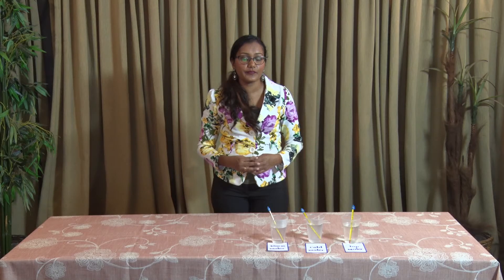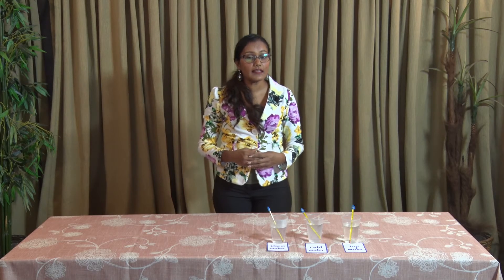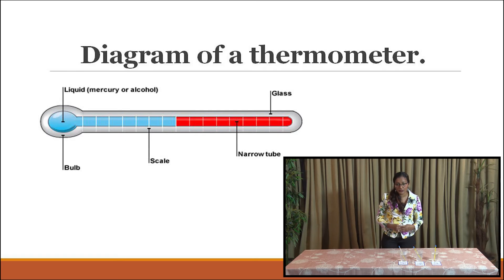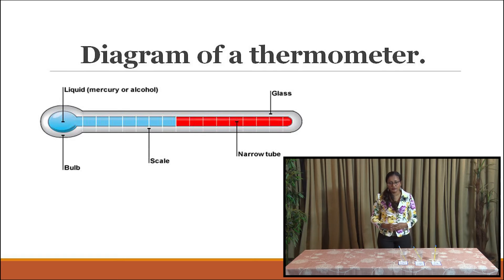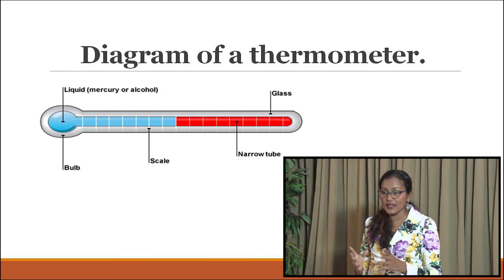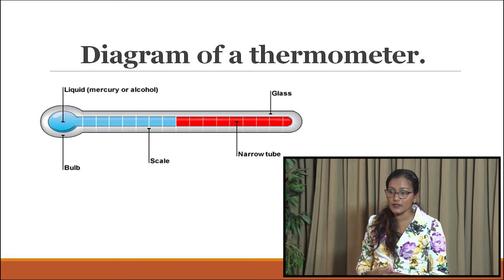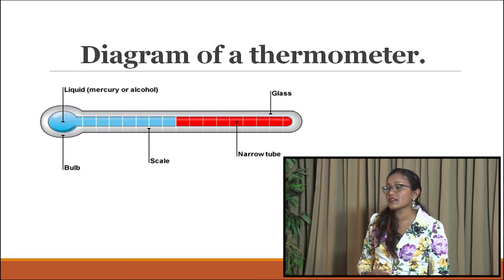Your task for this lesson: I would like you to draw and label a thermometer. Here is an example of how it should look. Here we have the diagram of the thermometer with all the parts labelled.